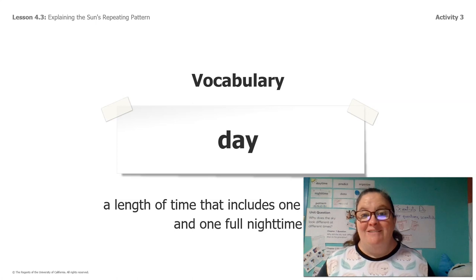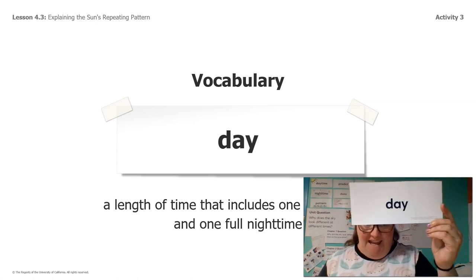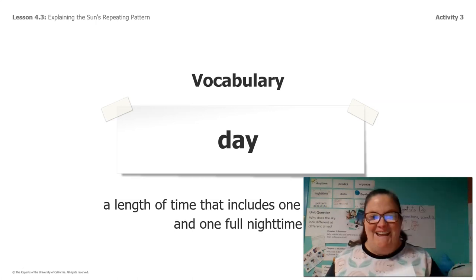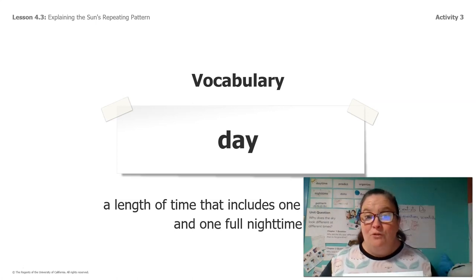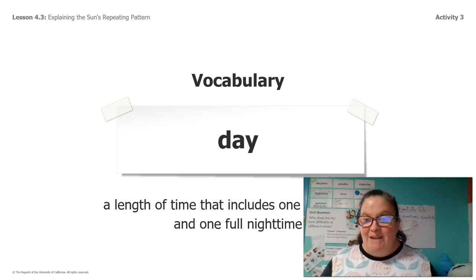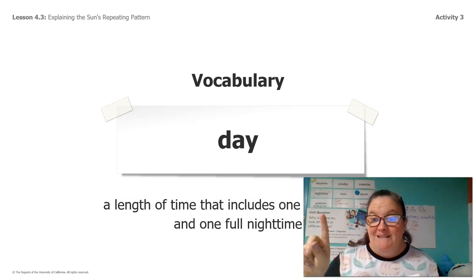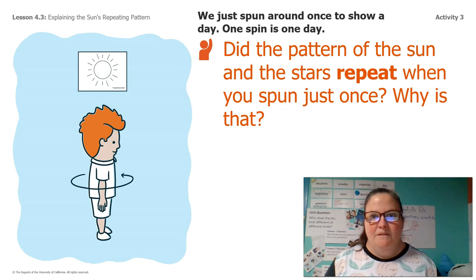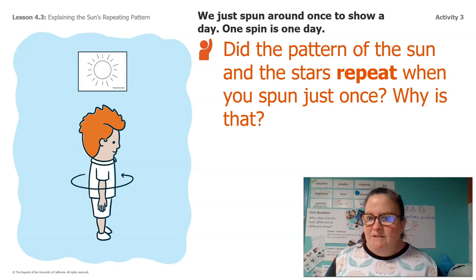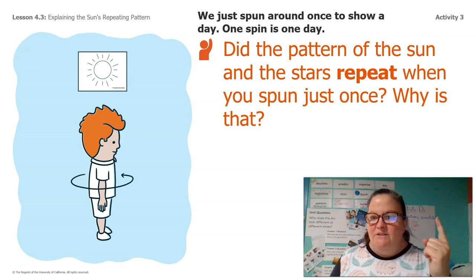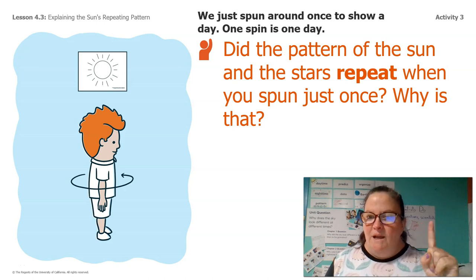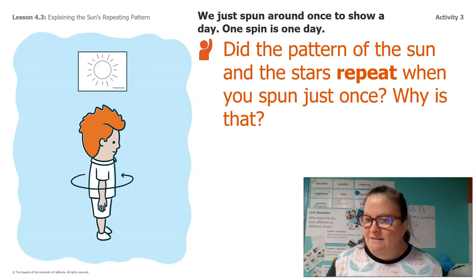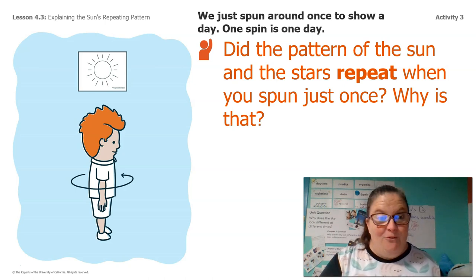We just came up with our last vocabulary card. A day is the length of time that includes one full daytime and one full nighttime. You get one day because the Earth spins around one time. Did the pattern of the sun and the stars repeat when you spun just once? No, it didn't — you only saw the stars once and you only saw the sun once. Because you only spun around once.